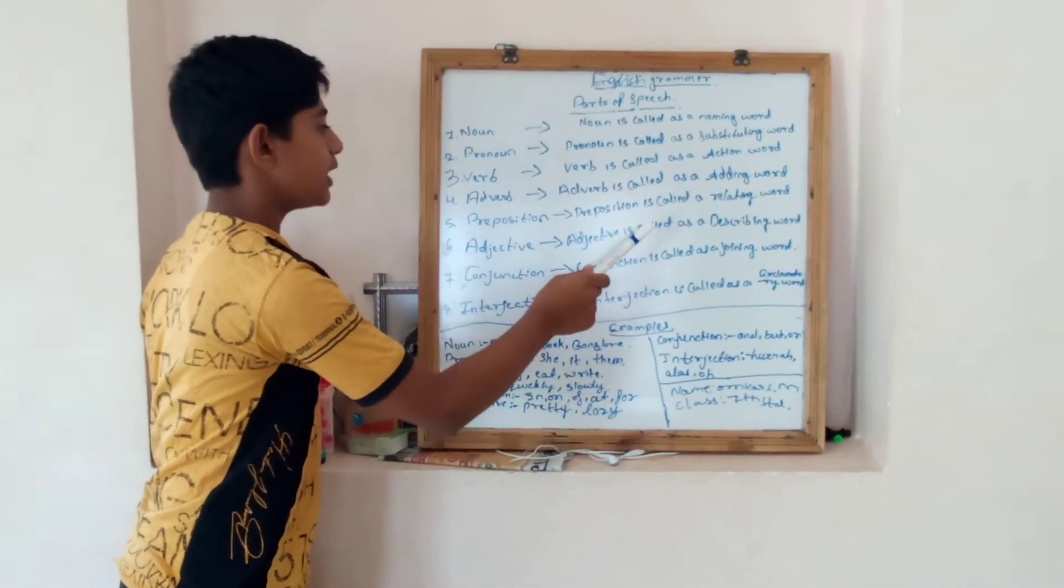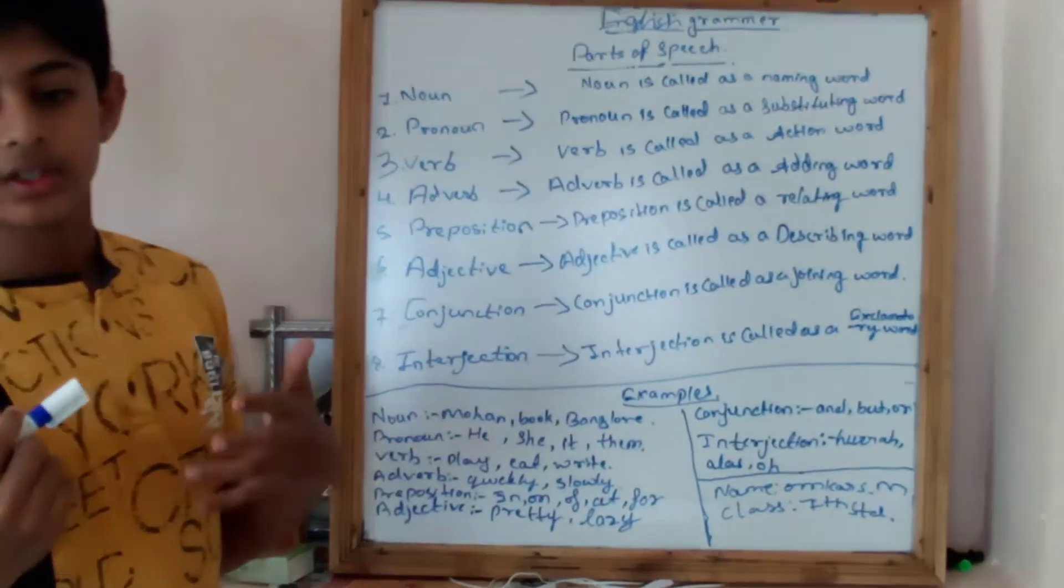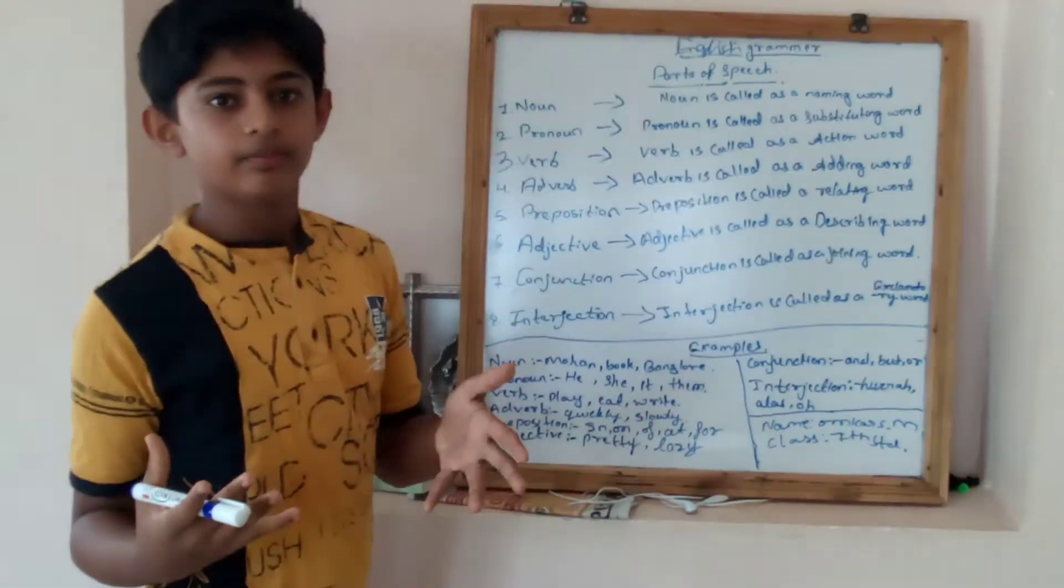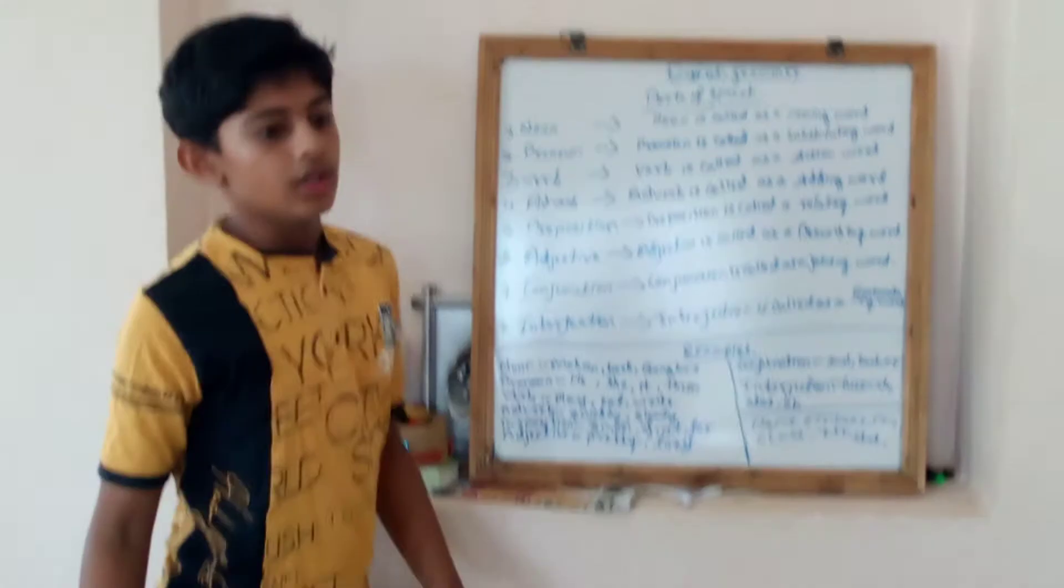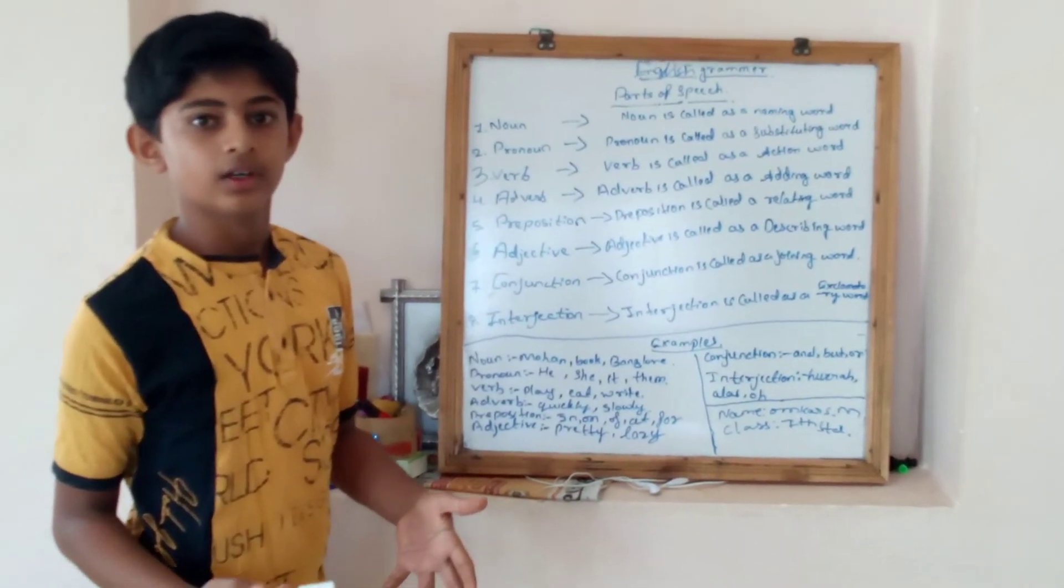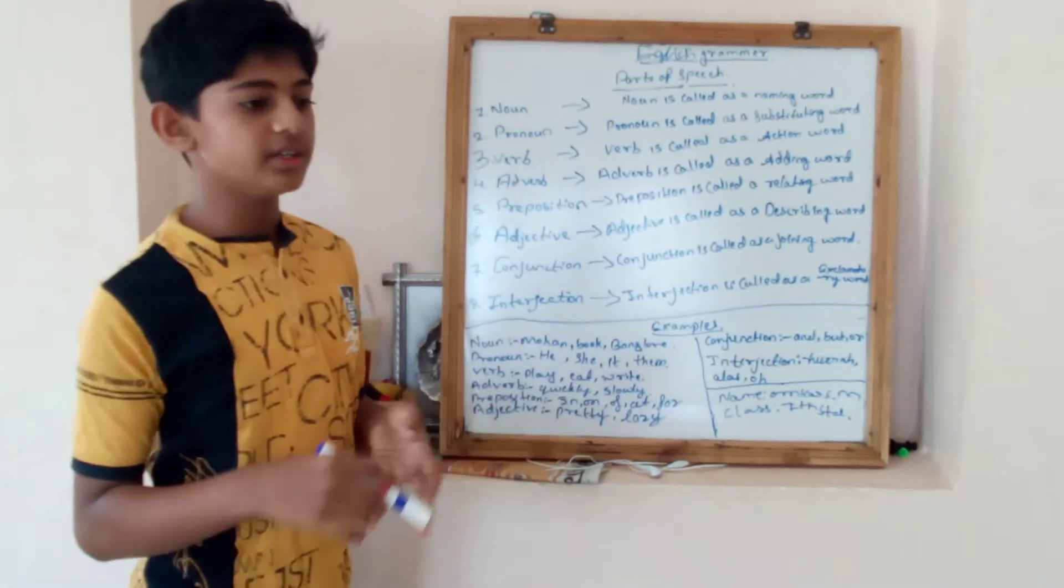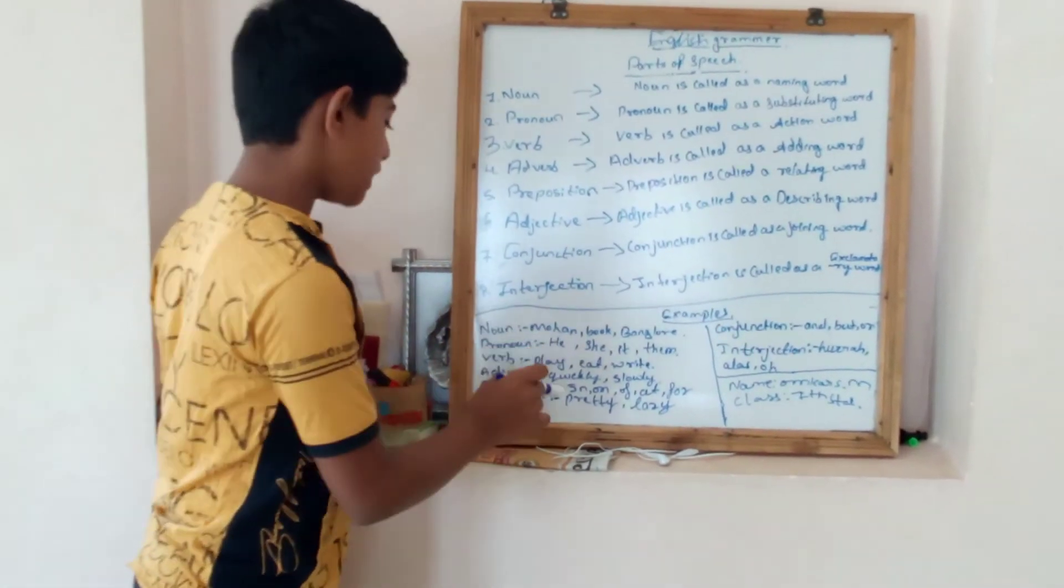And adjectives. Adjective is called as a describing word, like pretty and lazy. Mohan is very lazy and Sheela is very pretty. So it describes how they are.